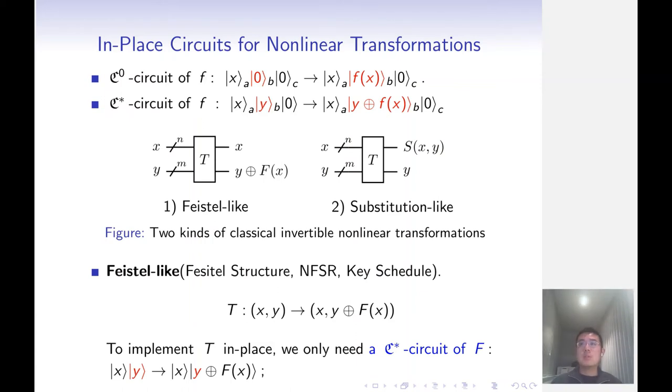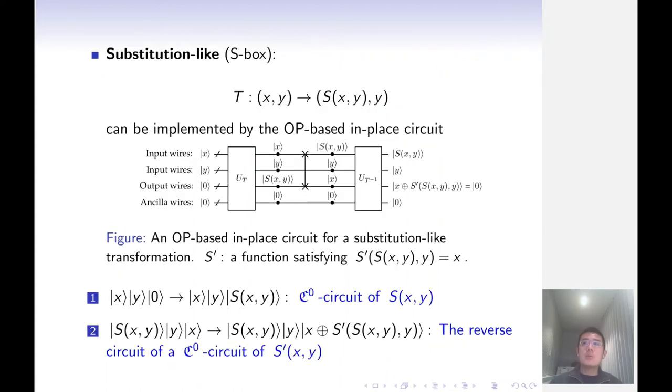The first one is the Feistel-like transformation, which can be implemented in place by a C-star circuit. The second one is the substitution-like transformation, which can be implemented in place by two C0 circuits with the structure we introduced before.